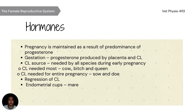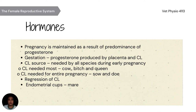Pregnancy is maintained as a result of the predominance of progesterone. The corpus luteum (CL) is the source needed by all species during early pregnancy. CL is needed throughout most of pregnancy in cow, bitch, and ewe. CL is needed for the entire pregnancy in sow and doe. Regression of the CL leads to parturition.